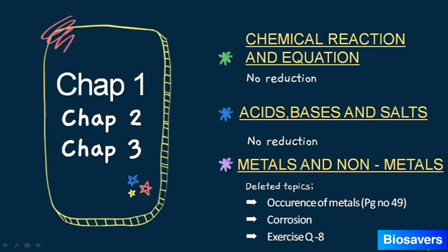Now let's see which portions have been deleted from each chapter. In Chapters 1 and 2 there is no reduction — we have to study the whole chapter along with all exercise questions. In Chapter 3, the deleted topics are: occurrence of metals, corrosion, and exercise question number 8. Other than these three portions, all topics and exercise questions must be referred.